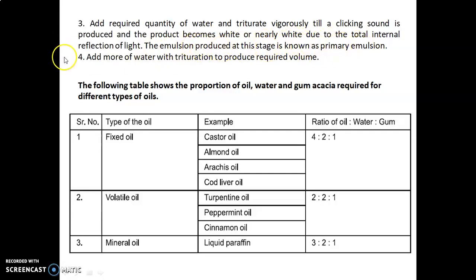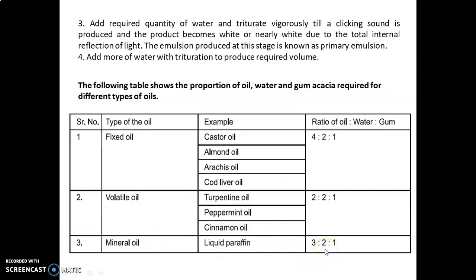The product becomes white or nearly white due to total internal reflection of light; the emulsion produced at this stage is known as the primary emulsion. Then add more water with trituration to produce the required volume. The ratio of oil to water to gum for different oils: fixed oils (e.g., castor oil, almond oil, arachis oil, cod liver oil) — 4:2:1; volatile oils (e.g., turpentine, peppermint, cinnamon) — 2:2:1; mineral oil/liquid paraffin — 3:2:1.